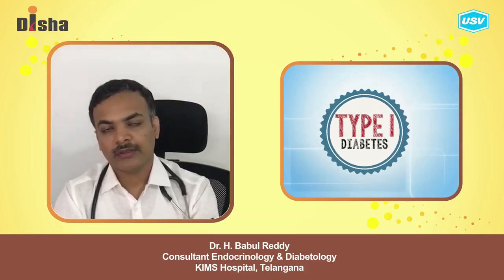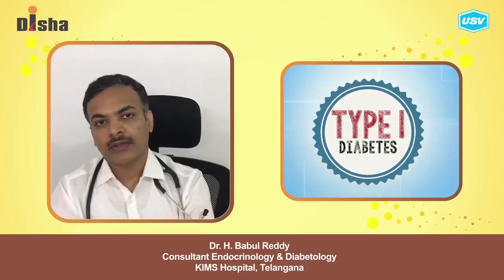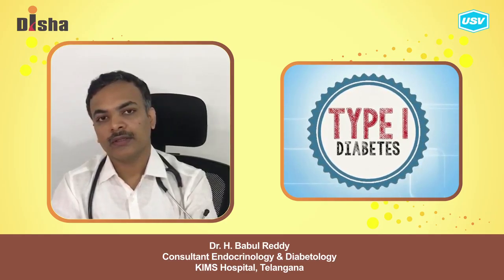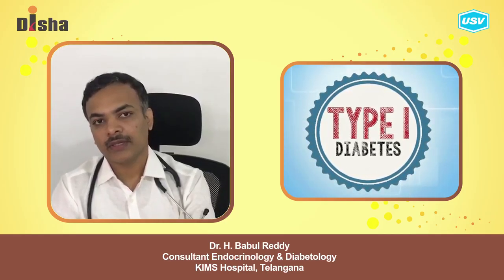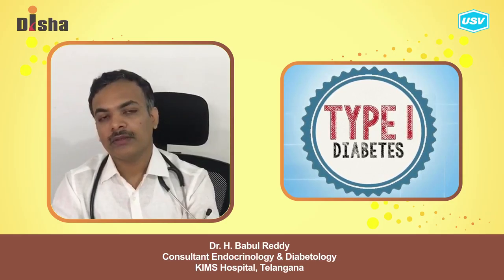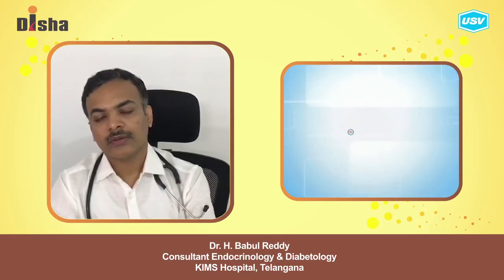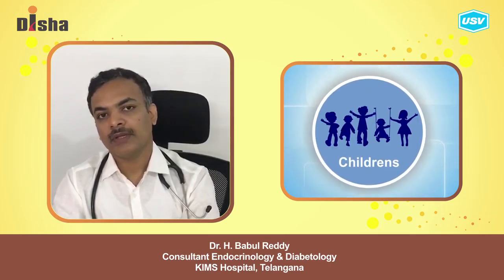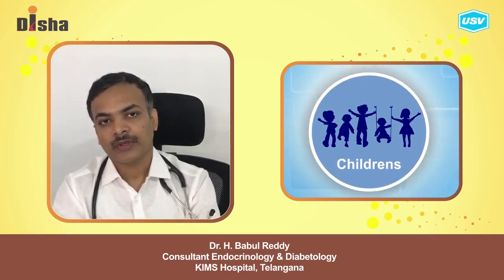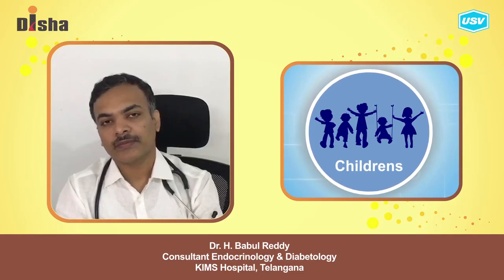Type 1 diabetes means it is a type of diabetes where there is absolute insulin deficiency — so there is no insulin at all in the body. This usually happens in younger individuals, but sometimes it can also occur in adult patients.